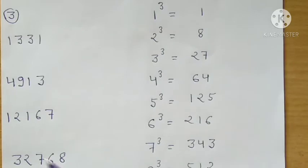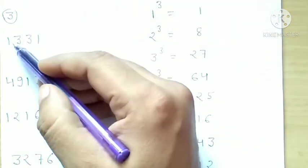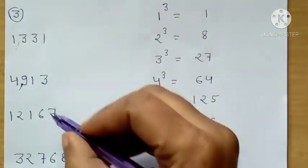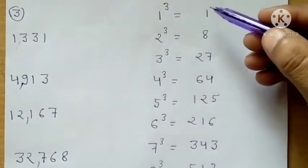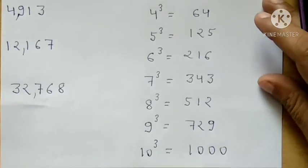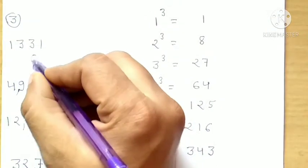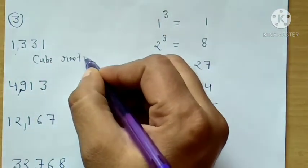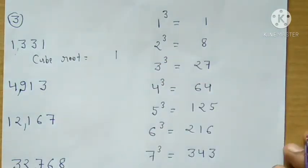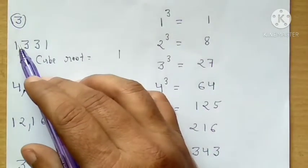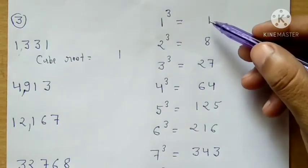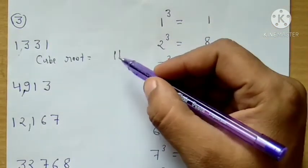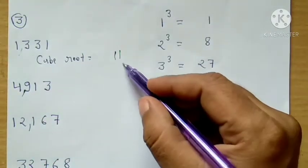First, we separate the digits into groups of three from the right. For 1331, we separate: 1 | 331. Now, the last group is 331. The last digit is 1. Since 1³=1, the unit digit of the cube root is 1. Then we look at the first group, which is 1. The number 1 lies between 1³=1 and 2³=8, so the tens digit is 1. Therefore, the cube root of 1331 is 11.